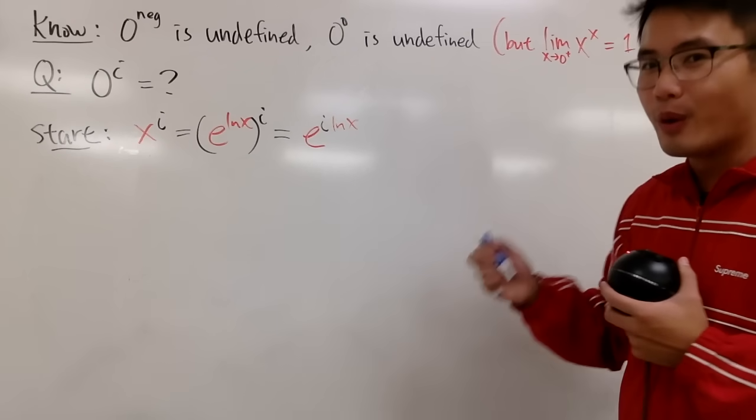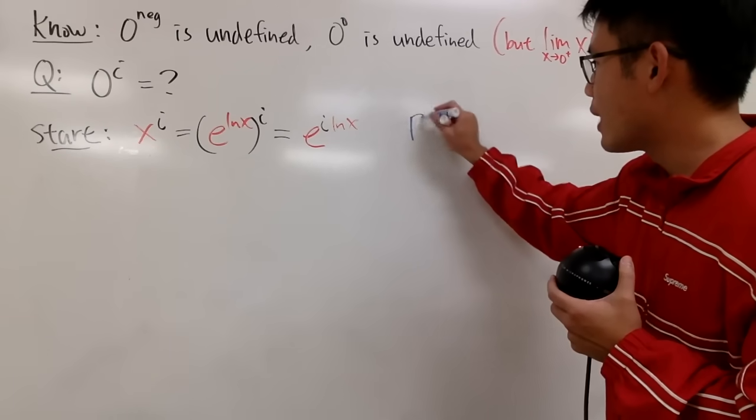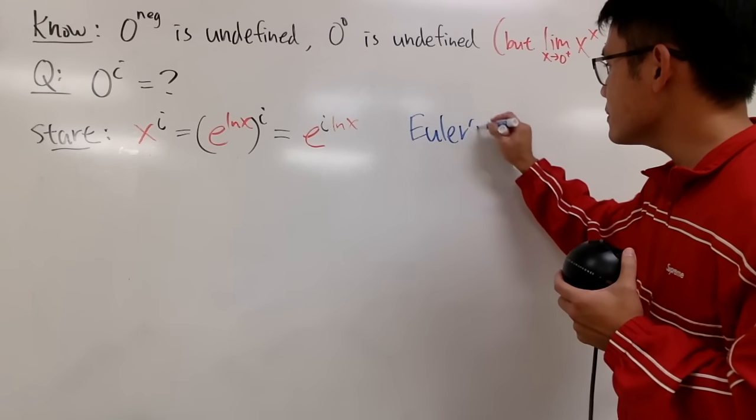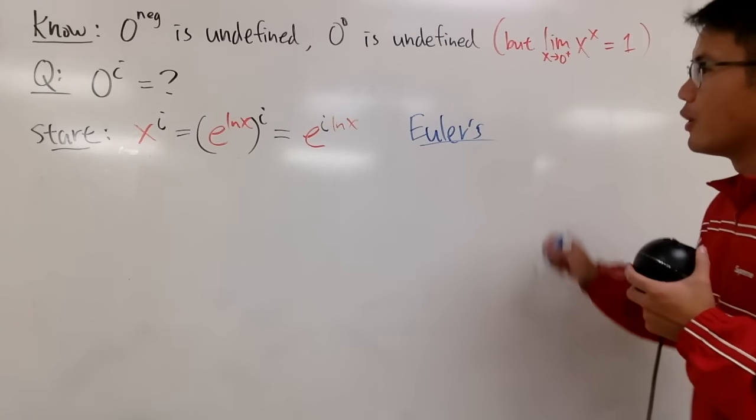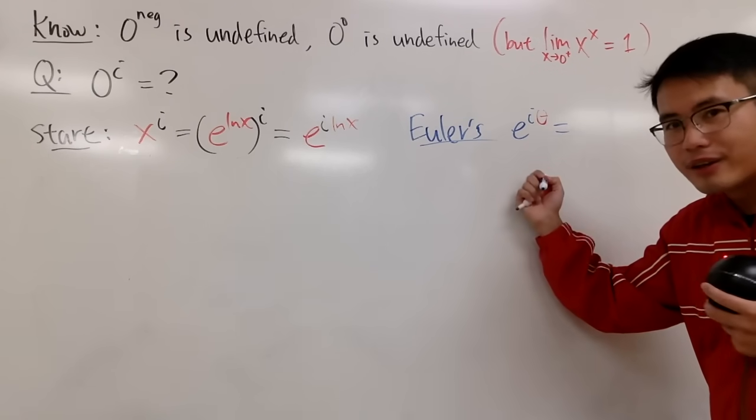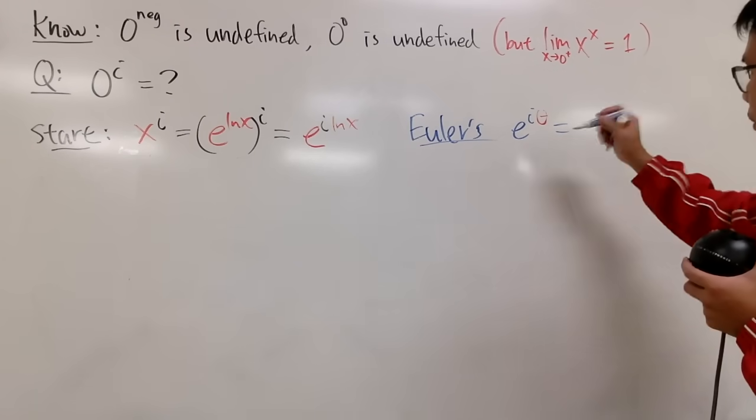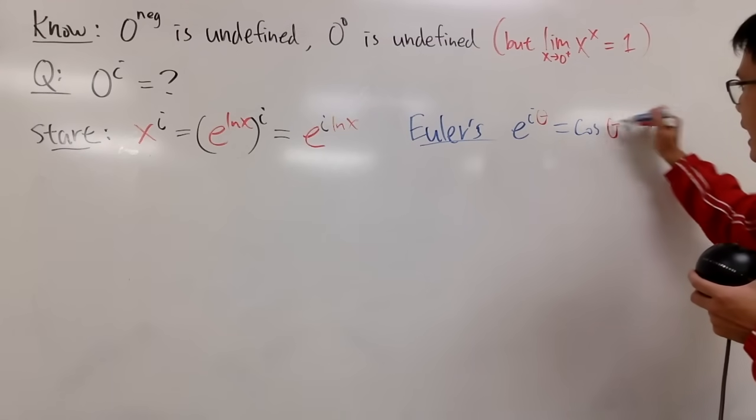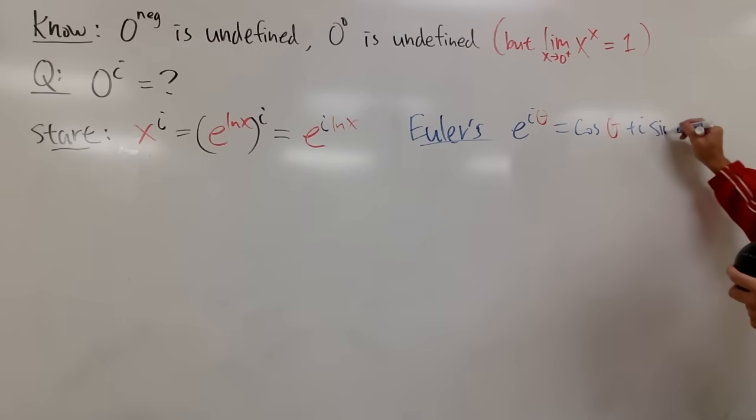We can use Euler's formula, and let me write it down for you guys right here. So, here's the deal. When we have e raised to the i theta, this right here, thanks to Euler, we know this is cosine theta plus i sine theta.